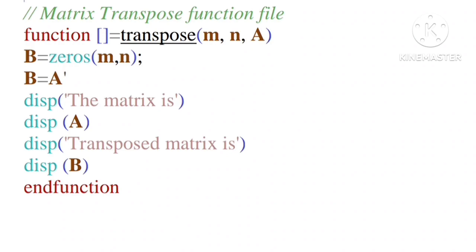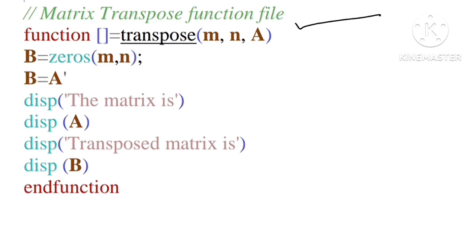Today's topic is matrix transpose function. Here we have to write the function: transpose(m, n, a). After writing this, we have to write b = zeros(m, n) with a semicolon, where b is the transpose of a.